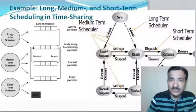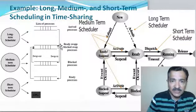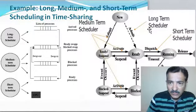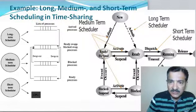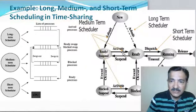Whenever a process is newly created — when a new process arrives — it is put in the list of new processes. From there it is scheduled to the ready queue, or it could be scheduled to the ready suspended queue. Scheduling the process from job creation to the ready queue or the ready suspended queue is done by the long term scheduler.